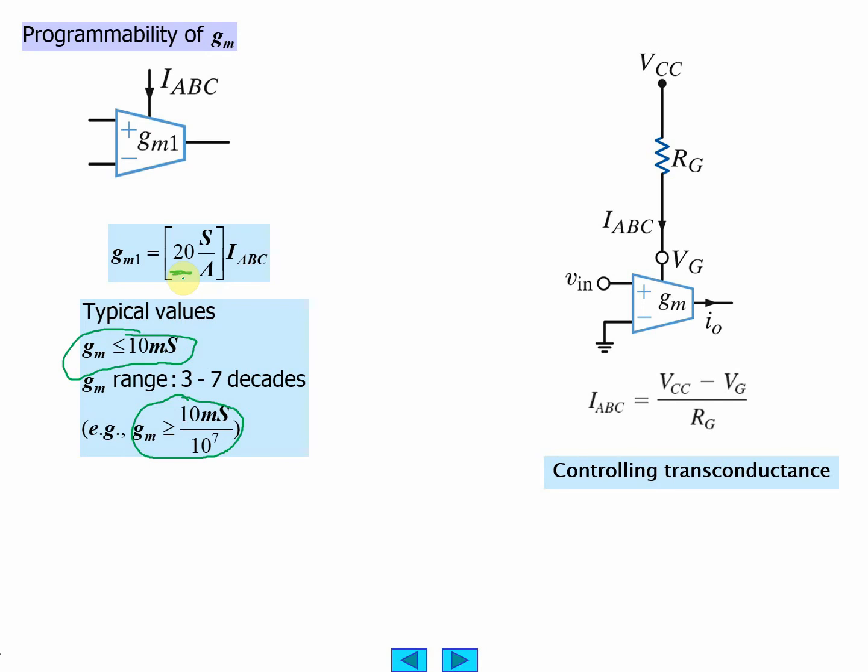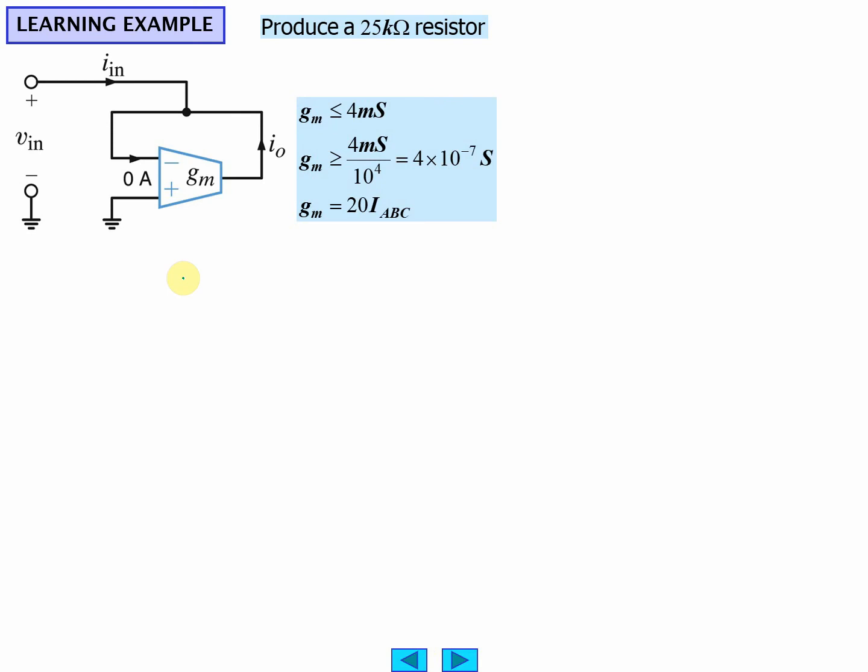So you can control the transconductance. That can be useful in a lot of different places. So here's your variable resistor. You can control the transconductance. You set a voltage or current to produce this resistor. Figure out the current.